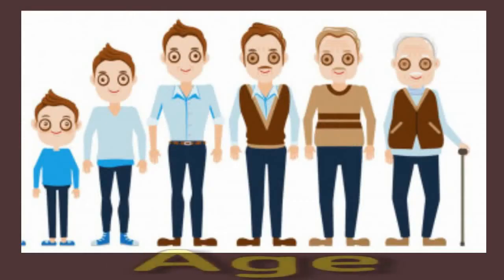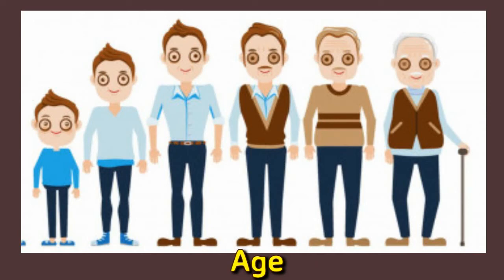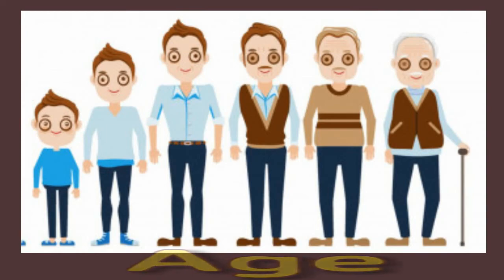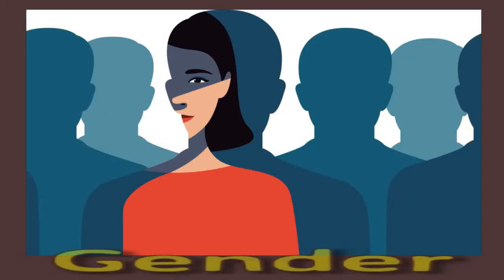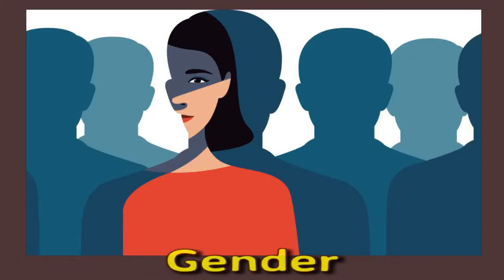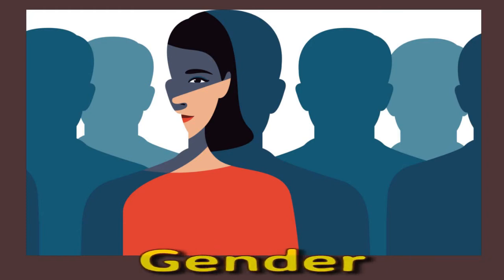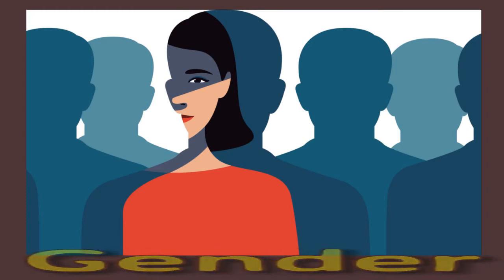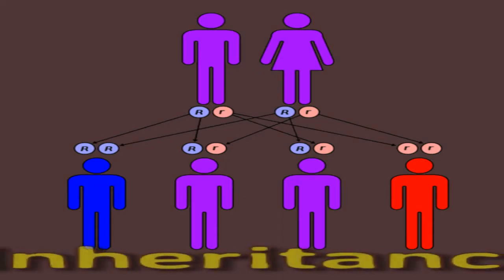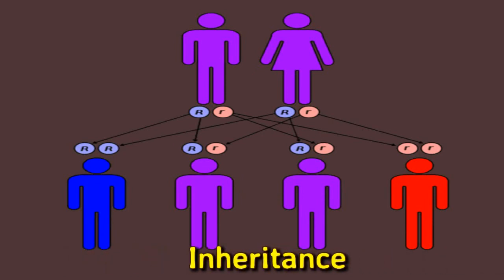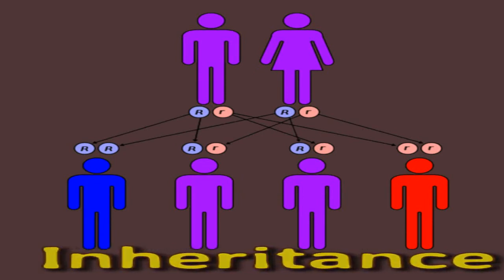Factors that cannot be changed include age — people become more prone to developing polyarthritis as they age. Gender also plays a role, as the rate of diagnosis of recent cases is higher in women than in men. Additionally, inheritance is a factor, as specific genes can make a person more likely to develop polyarthritis.